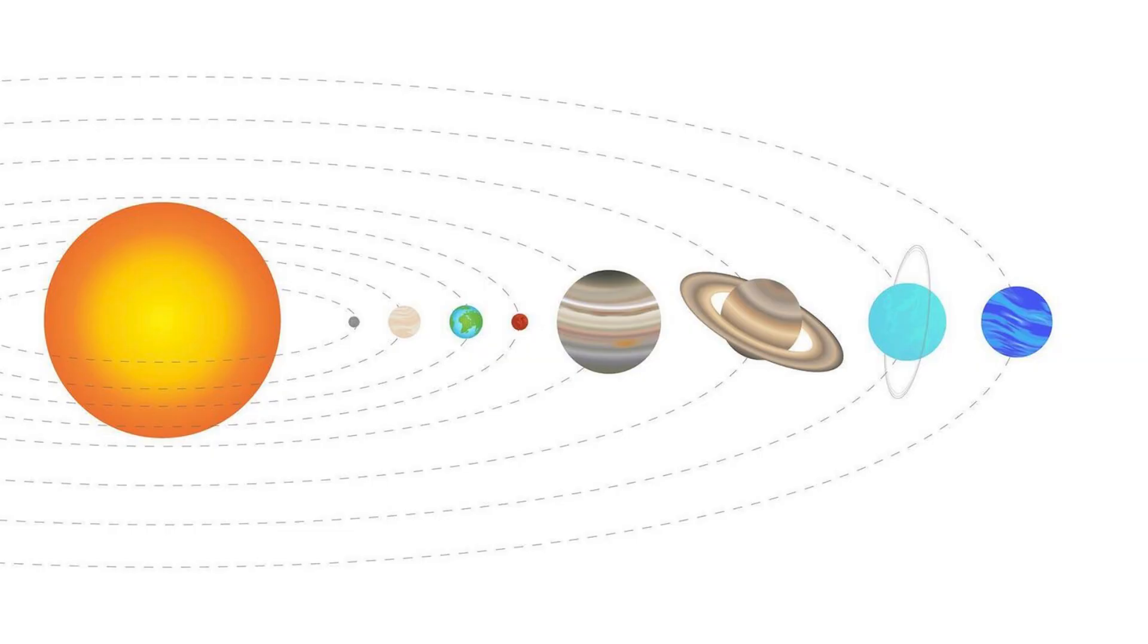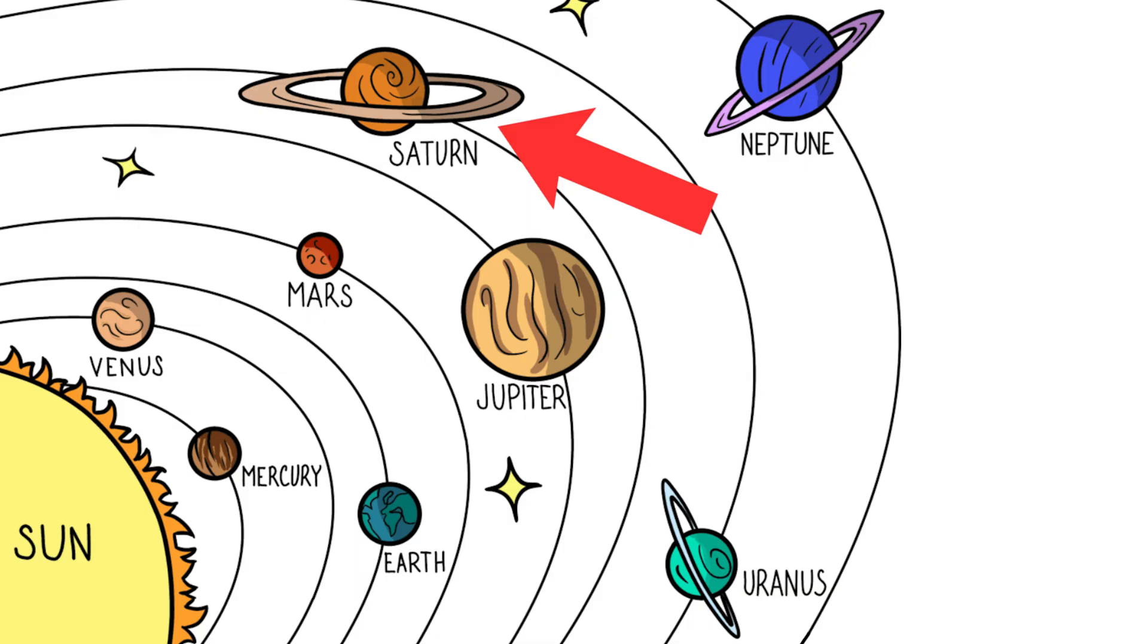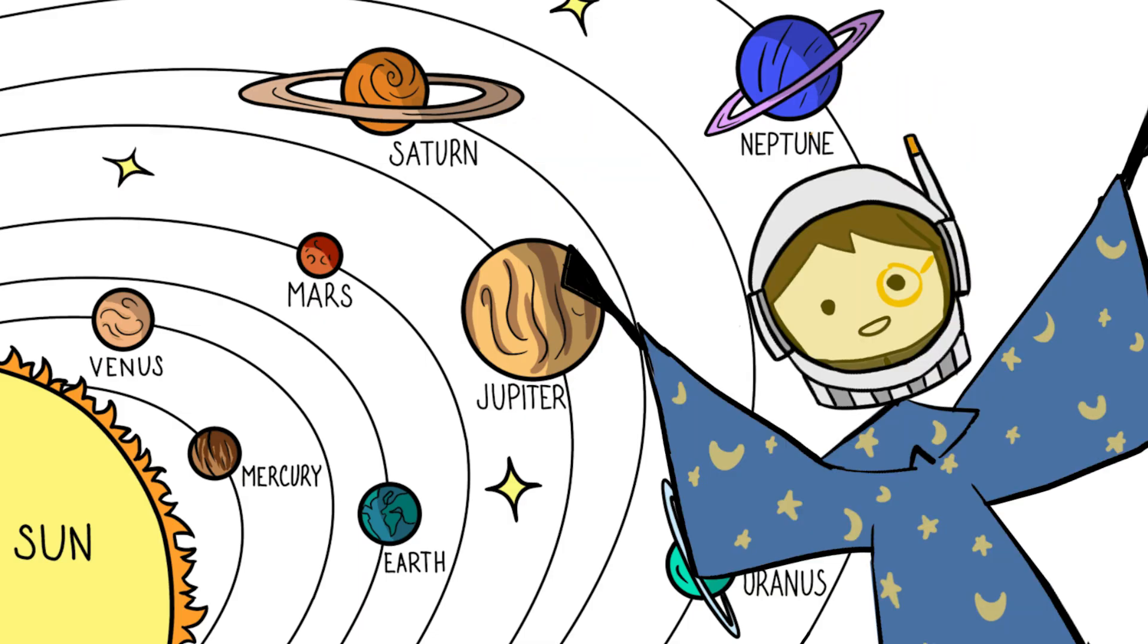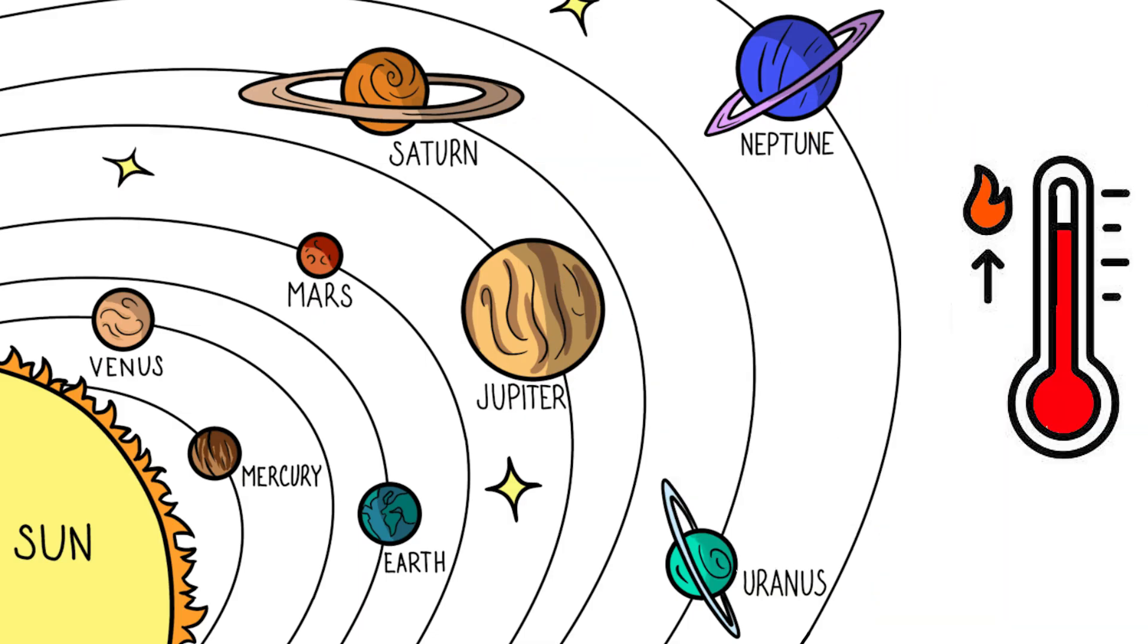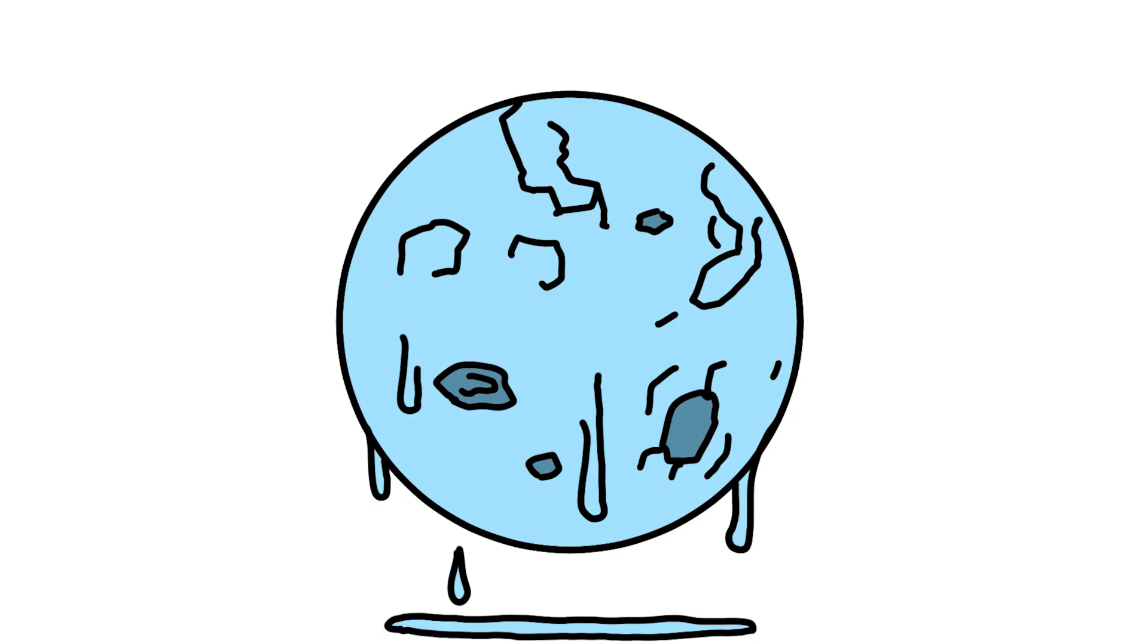Planets in the outer solar system, Jupiter, Saturn, Uranus, Neptune, experience dramatic increases in temperature. Their icy moons begin to thaw.